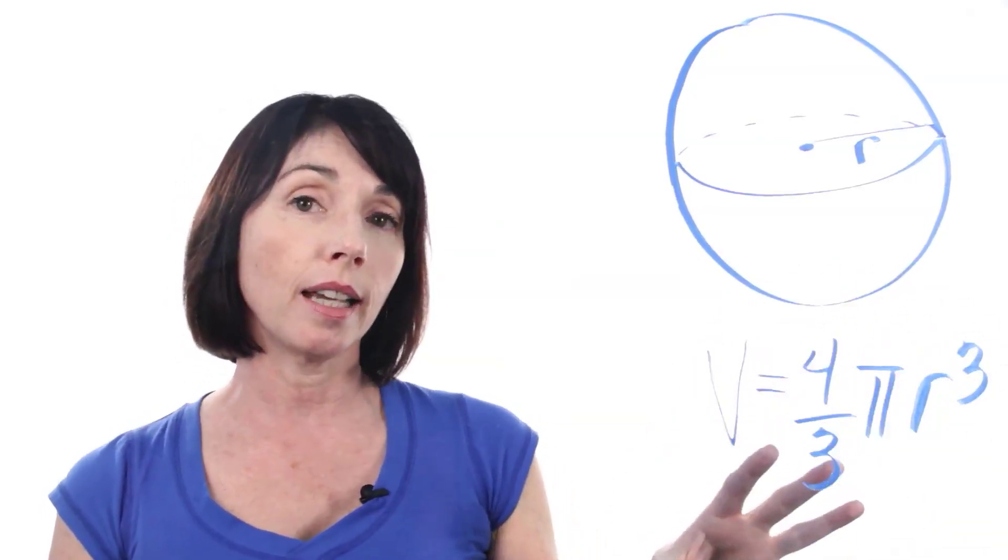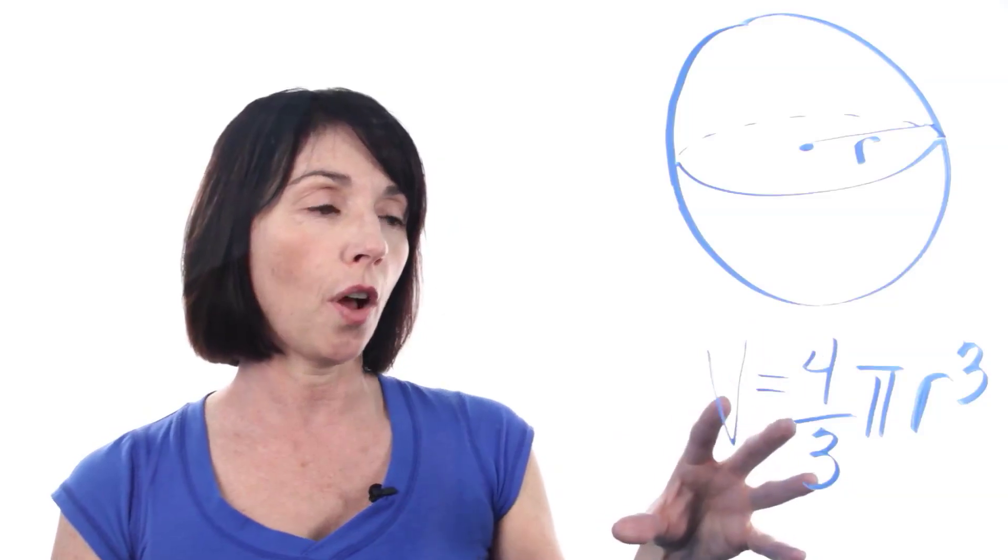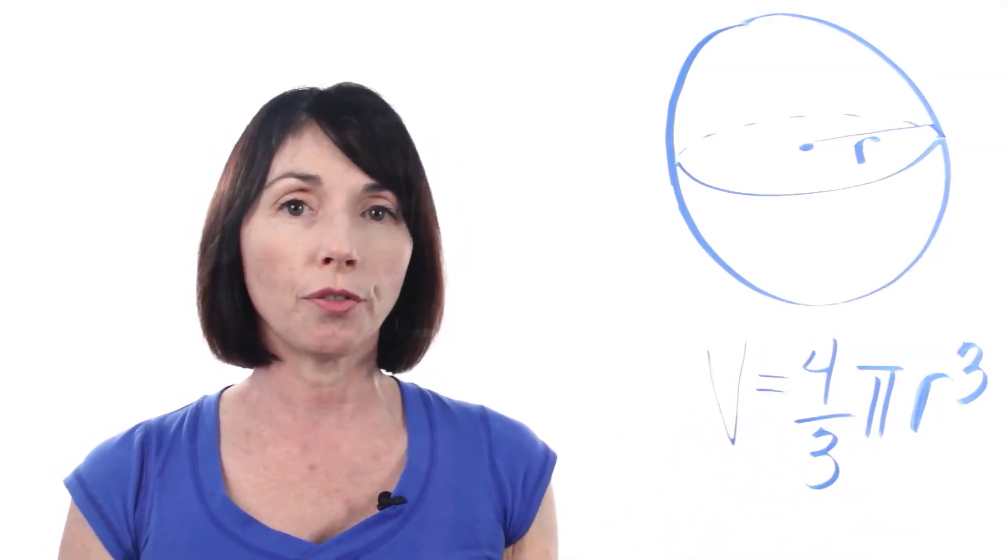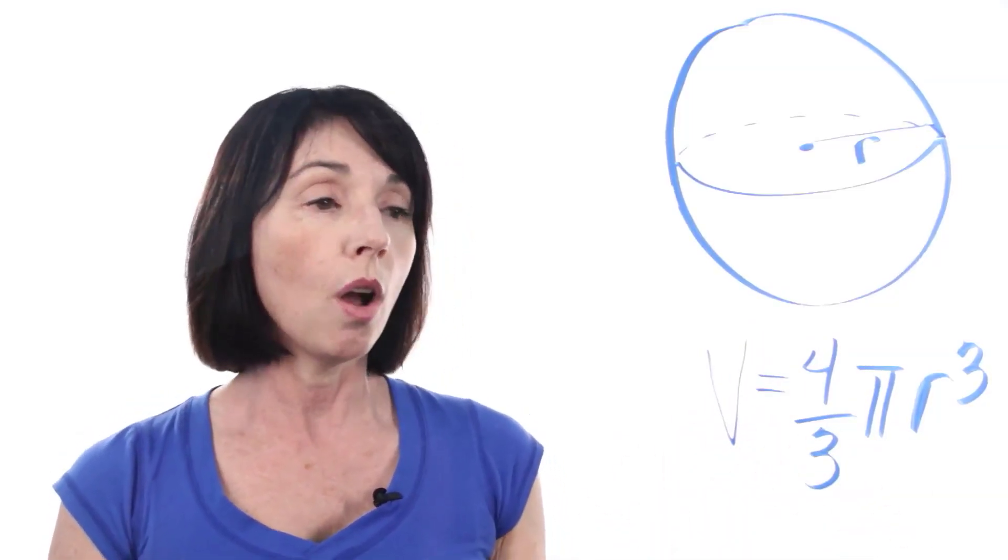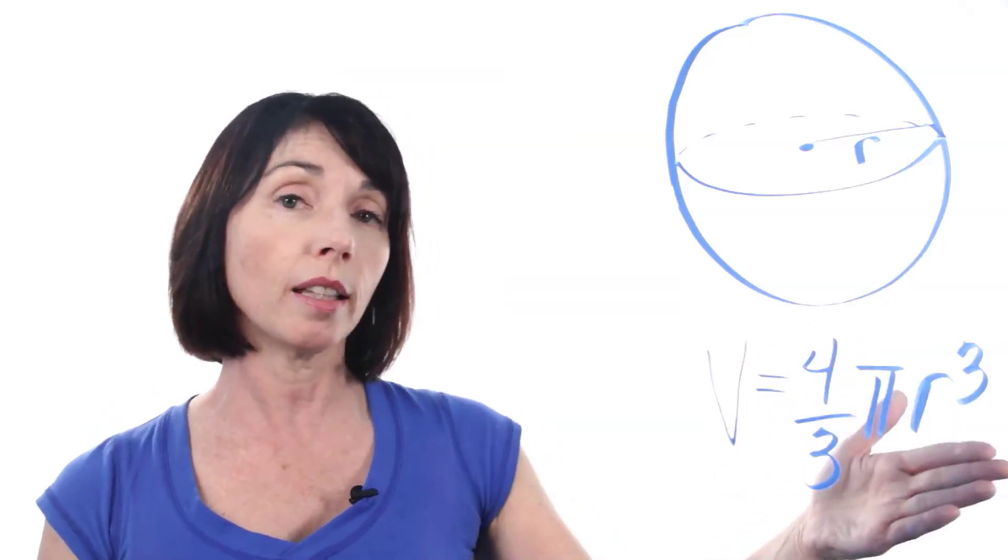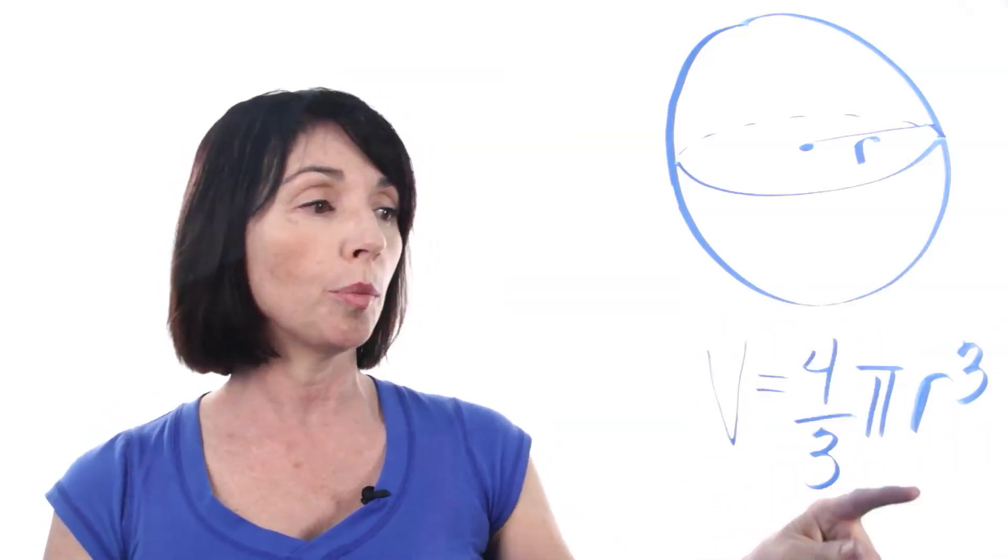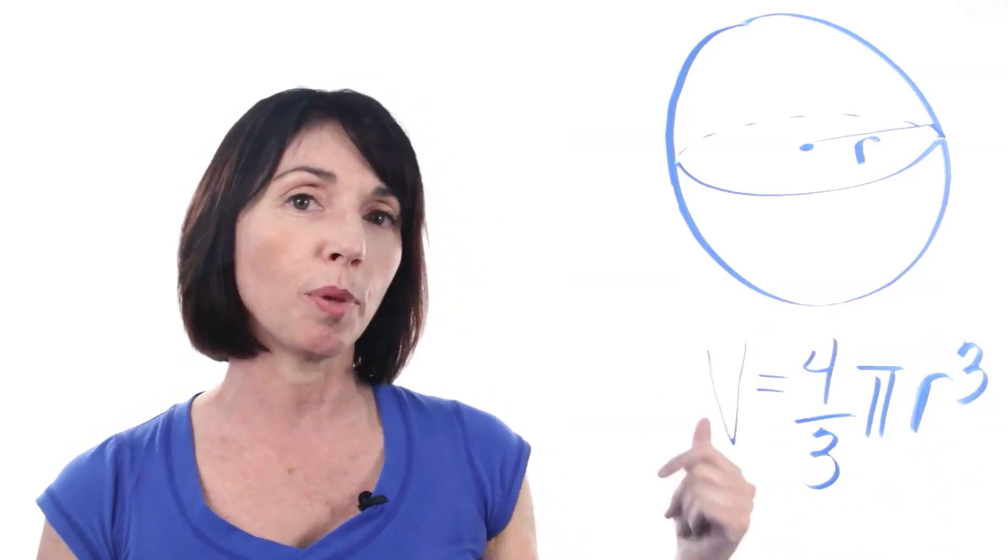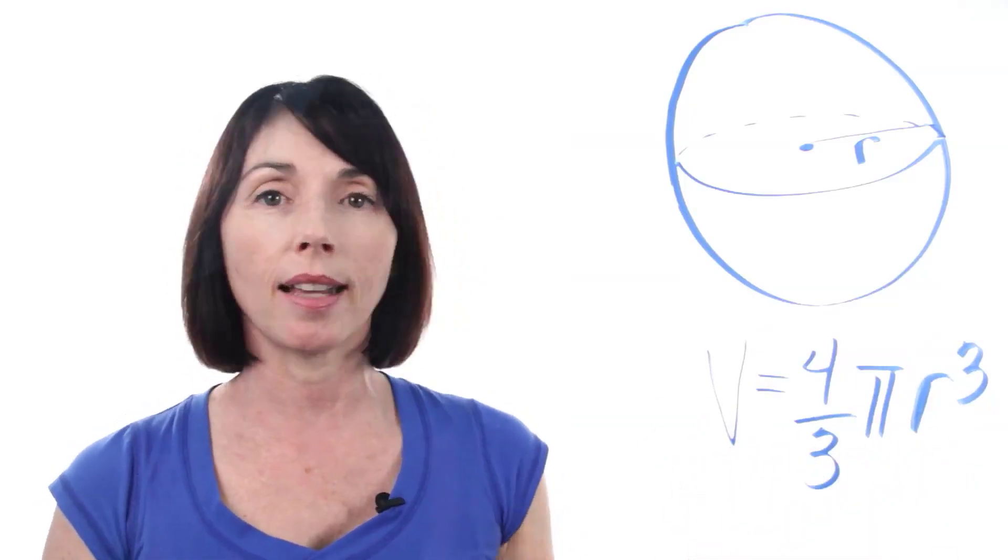Now, if you need to calculate a numerical value for your volume, you can use an approximation for pi like 3.14. Or sometimes you'll just see volumes measured just like this, four thirds pi r cubed with whatever the number of the radius is plugged in. A lot of times pi just gets left there.